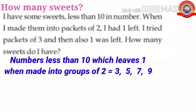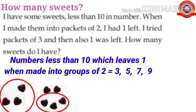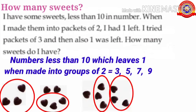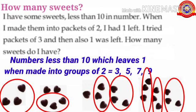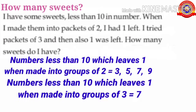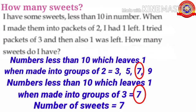When she made these sweets into packets of 3, then also 1 was left. That is, when 3 sweets are grouped into 3, there is no one left. When 5 sweets are grouped into 3, 2 sweets are left. When 7 sweets are grouped into 3, 1 is left. When 9 sweets are grouped into 3, none is left. See children, here which number grouped into 3 leaves 1? Yes, 7. So children, numbers less than 10 which leave 1 when made into groups of 3 equals 7. Which number comes in both? Yes, 7. So, number of sweets equals 7.